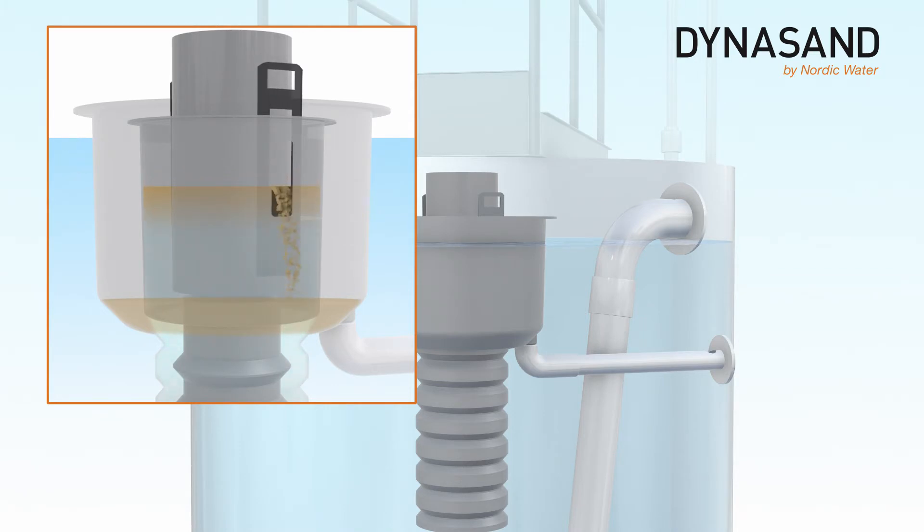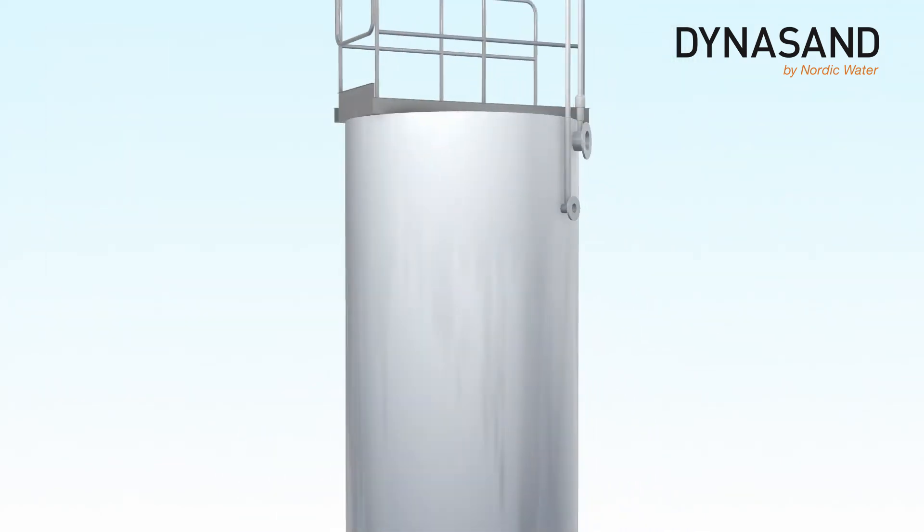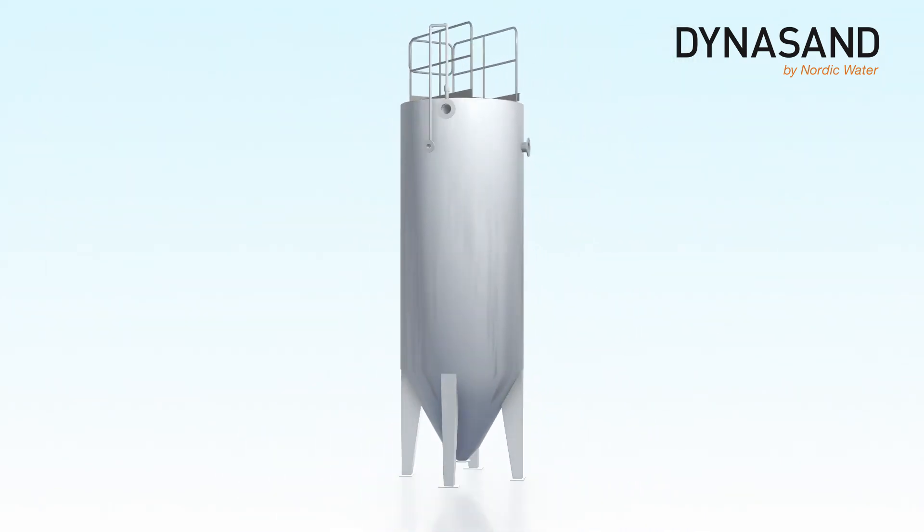The wash water passes the weirs into the collecting vessel and is discharged through the wash water outlet pipe while the uninterrupted filtration continues in the Dynasand filter.